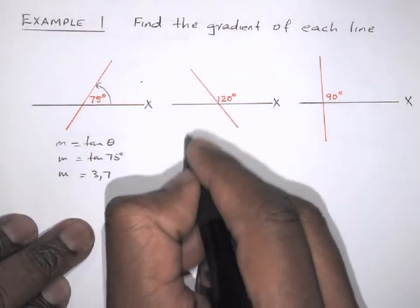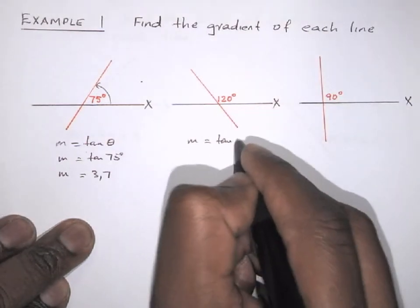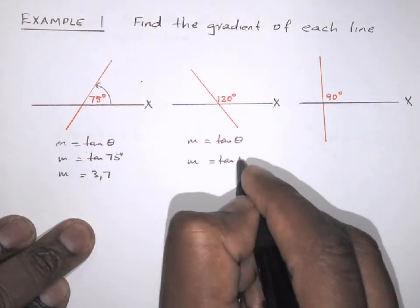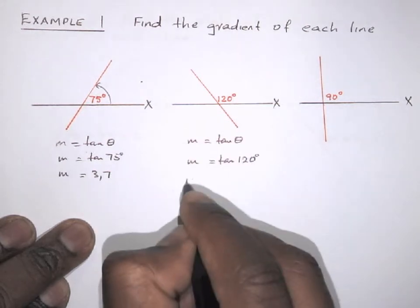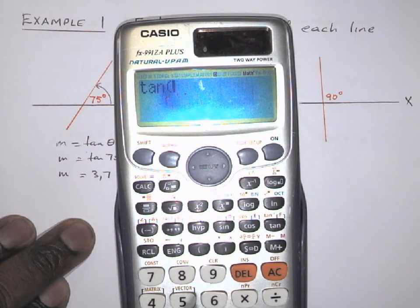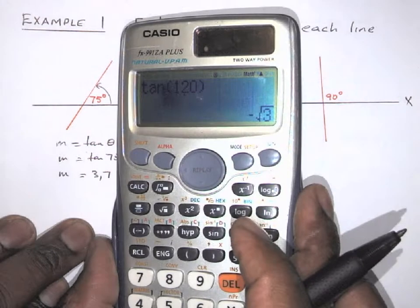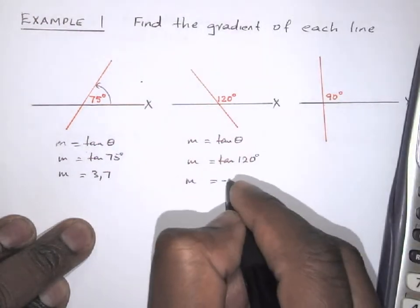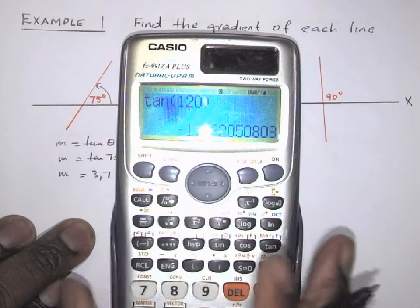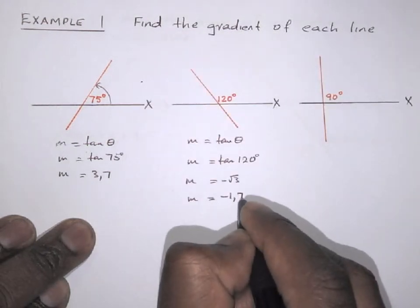Let's look at this one. Find the gradient of this line. So m equals tan of theta, and our theta here is 120 degrees. So m equals tan of 120 degrees, giving me negative square root of 3, or in decimal form, the answer is negative 1.7.